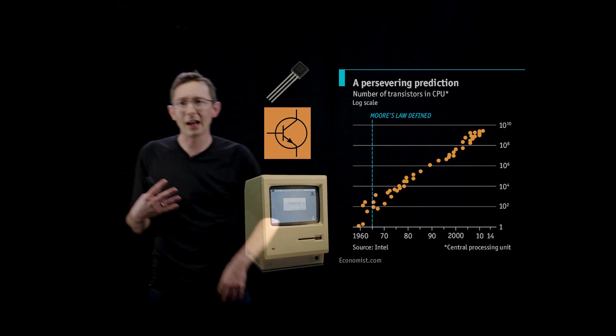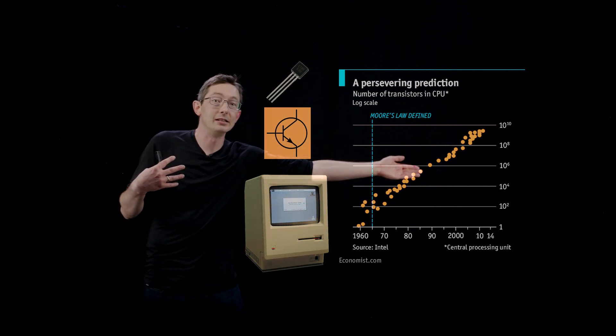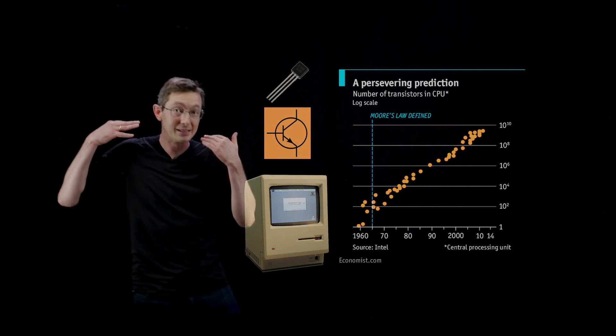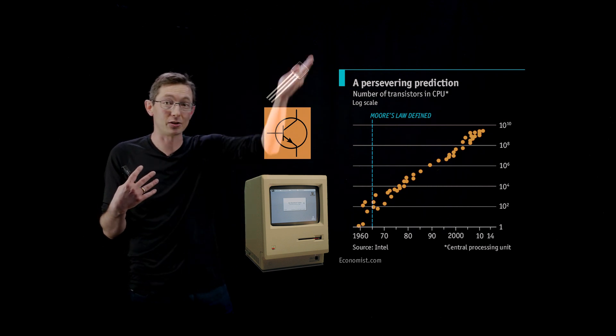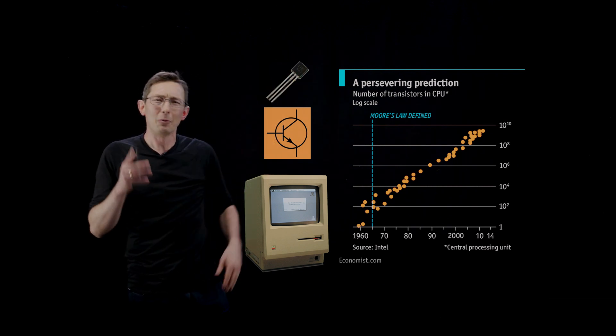And so the fact that this is linear in these logarithmic coordinates means that the number of transistors has been exponential for over 50 years, which is remarkable.